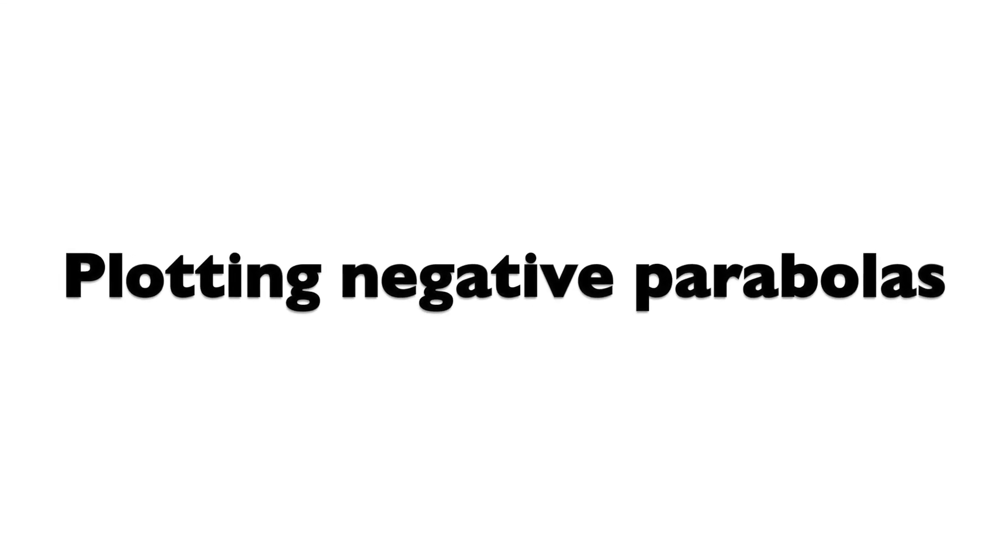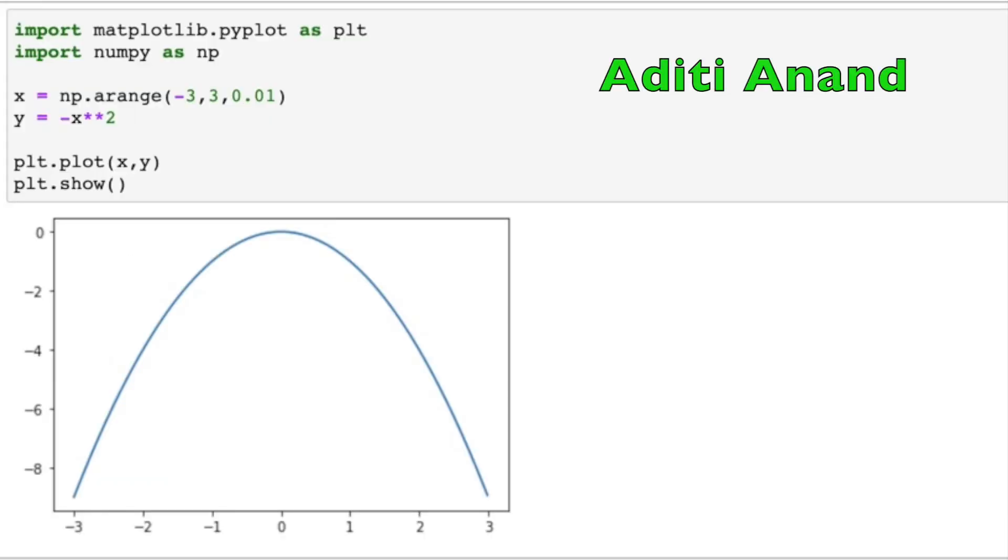Now, we move on to negative parabolas. The only difference for plotting a negative parabola is assigning y to negative x squared. This inverts the y values to make them the reverse of the positive parabola.